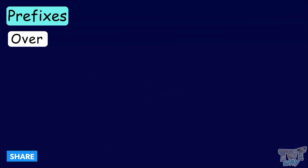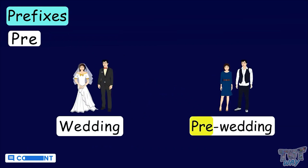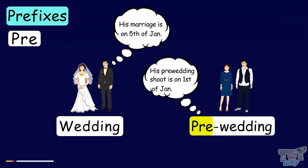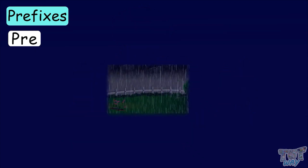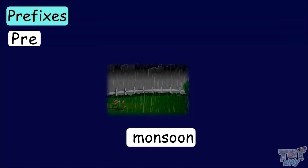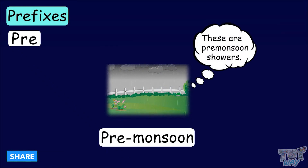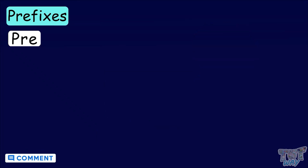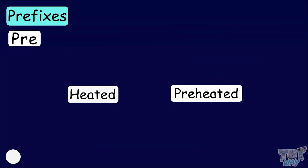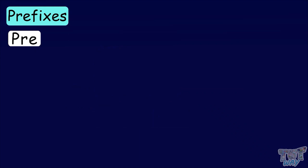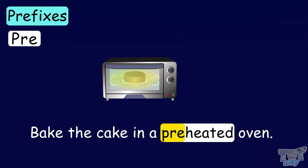Now here we have another prefix: pre. Pre-wedding — pre changes the meaning of the word wedding. Pre-wedding means before marriage. His wedding is on the 5th of January and his pre-wedding photoshoot is on the 1st of January. Monsoon is a word; now we append pre before it, so it becomes pre-monsoon. These are pre-monsoon showers. Heated, preheated — here pre means already. Pre-heated means already heated. Bake the cake in a preheated oven, that is, in an already heated oven.